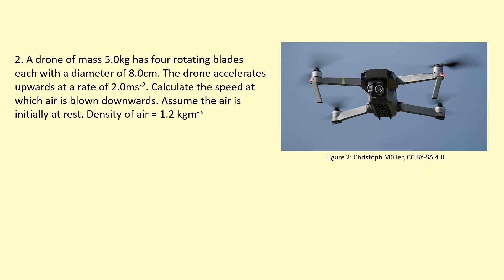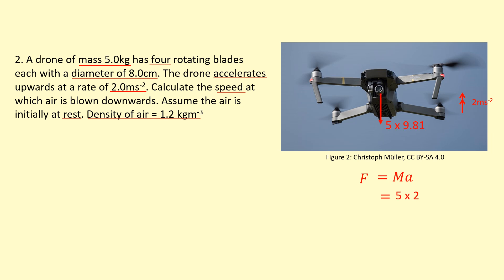Now we have another example — a drone. The physics is basically the same but a bit more difficult. The drone has a mass of 5 kg, four rotating blades, and is accelerating upwards at 2 m/s². We need to calculate the speed at which air is being blown downwards. A common mistake is to only use mass times acceleration for the force, but the drone also has weight acting downwards. Drawing a free body diagram: thrust minus weight equals the resultant force causing acceleration upwards. So thrust must overcome the weight and also provide the net upward force.